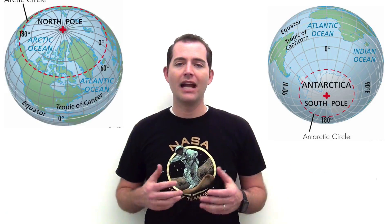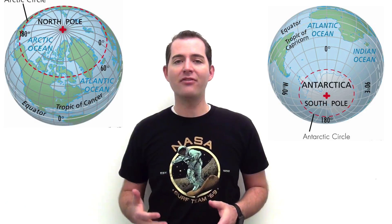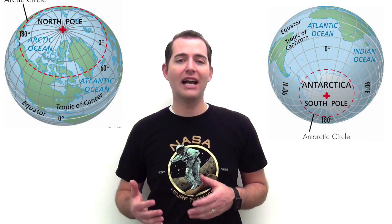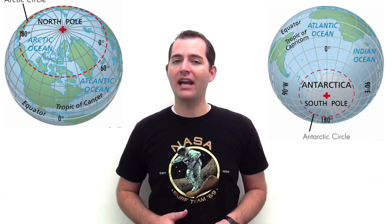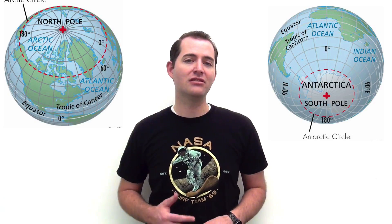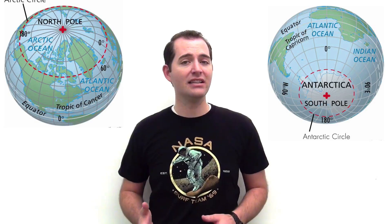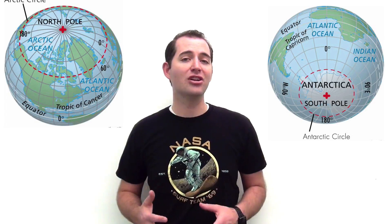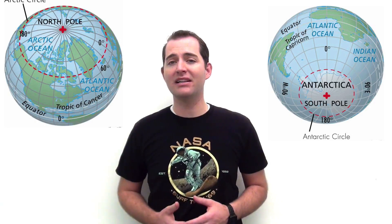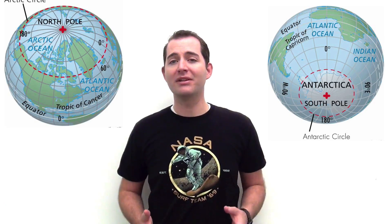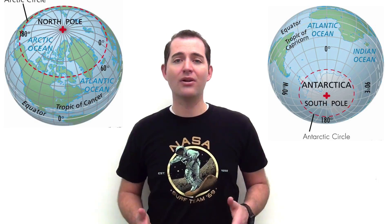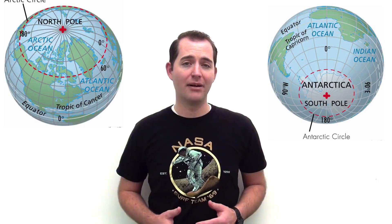Again, these events take place around the summer solstice and the winter solstice. And depending on how far north of the Arctic Circle and south of the Antarctic Circle a location is can determine how many days they experience of complete daylight or complete night time.